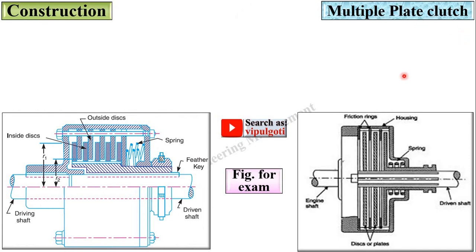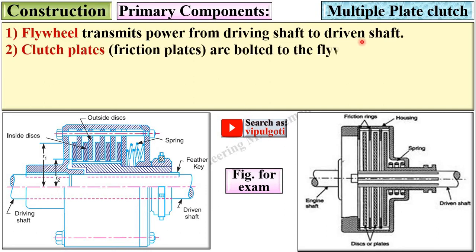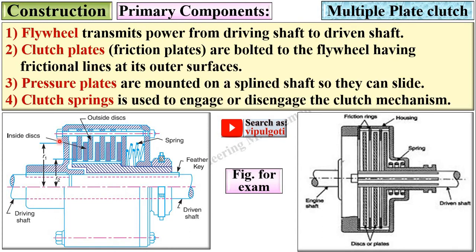Now, the construction of the multiple plate clutch. The flywheel transmits power from the driving shaft to the driven shaft; the initial part is the flywheel connected to the driving shaft. The clutch plates, sometimes called friction plates, are bolted to the flywheel and have frictional linings at their outer surface. Pressure plates are mounted on a splined shaft so that they can slide axially.